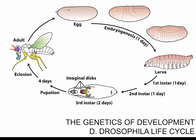The Drosophila life cycle starts with a fertilized egg laid by the female Drosophila. This egg undergoes embryogenesis for about 24 hours, after which the egg hatches resulting in a first instar larva. The first instar larva molts into the second instar larva, which then molts into the third instar larva. The third instar larva undergoes pupation for about four days until it ecloses in the form of an adult fruit fly.